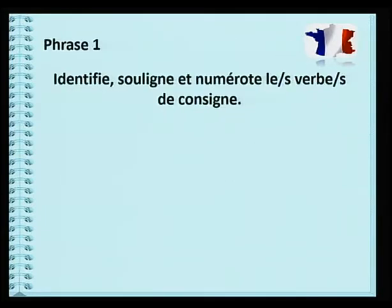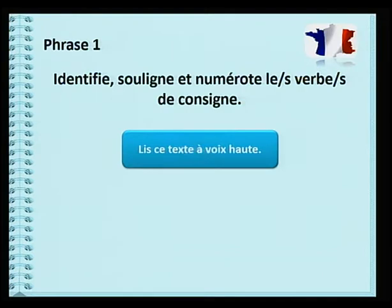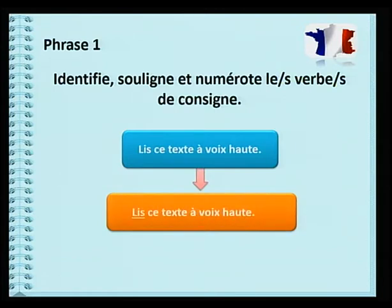Première phrase: «Lis ce texte à voix haute.» Très facile, celle-là. Donc, as-tu pu identifier le verbe de consigne? Le verbe de consigne est «lis». Et combien de tâches y a-t-il? Évidemment, il n'y a qu'une seule tâche à faire. Tu devras lire.